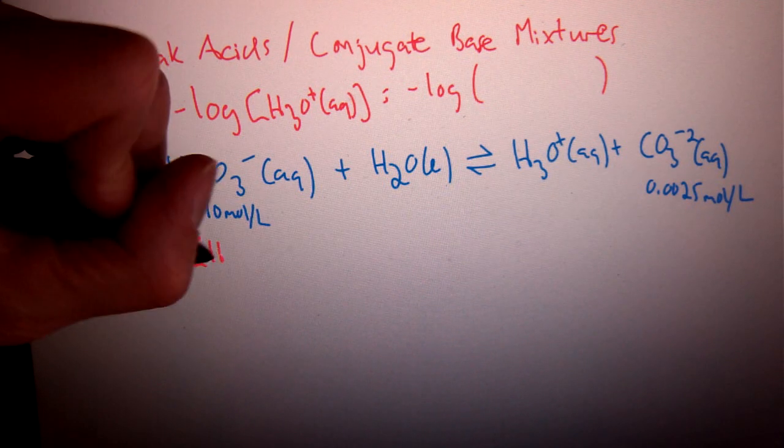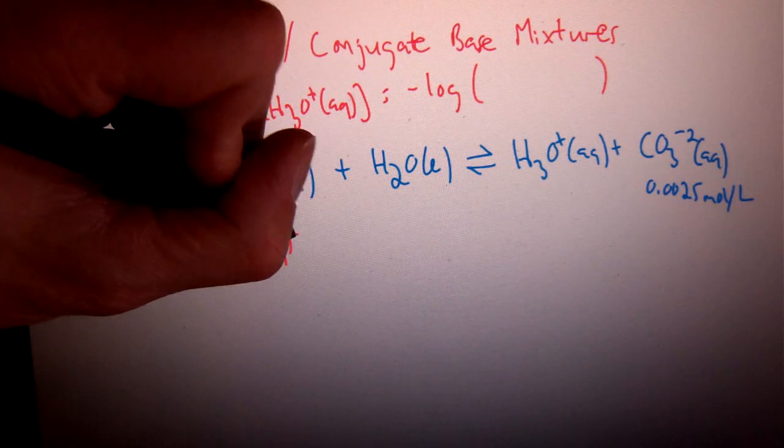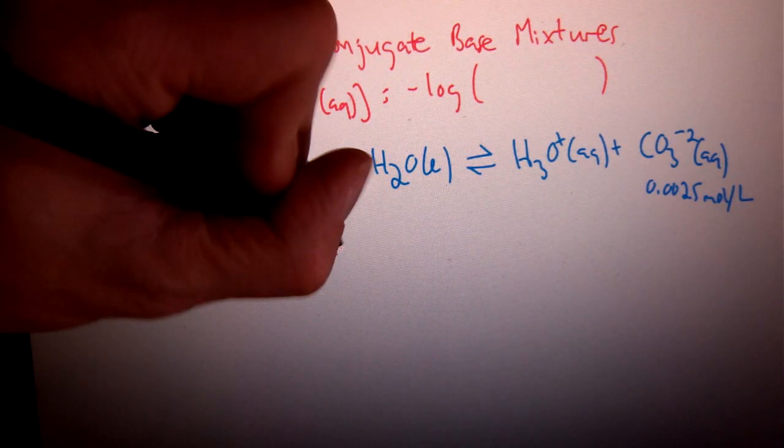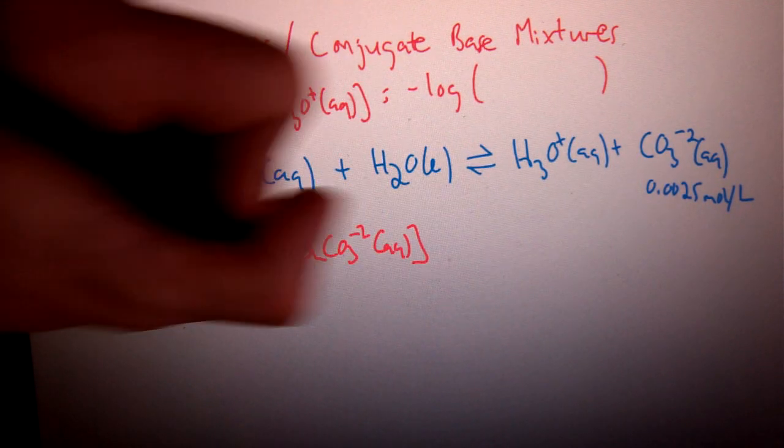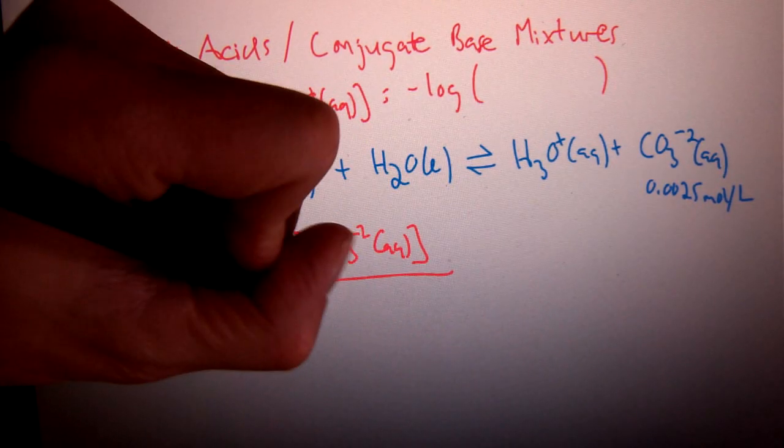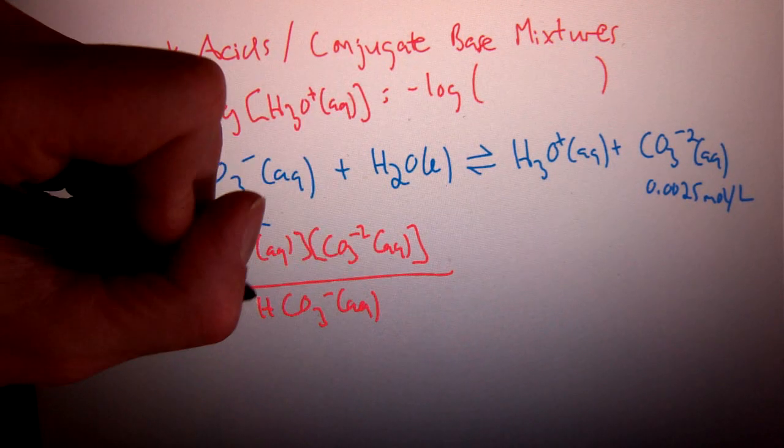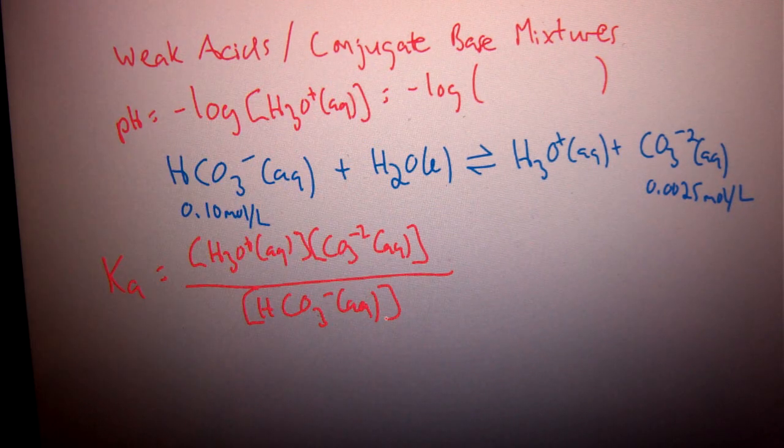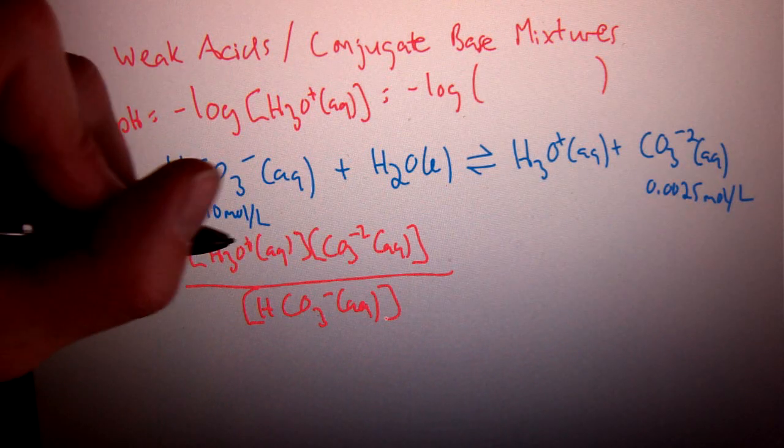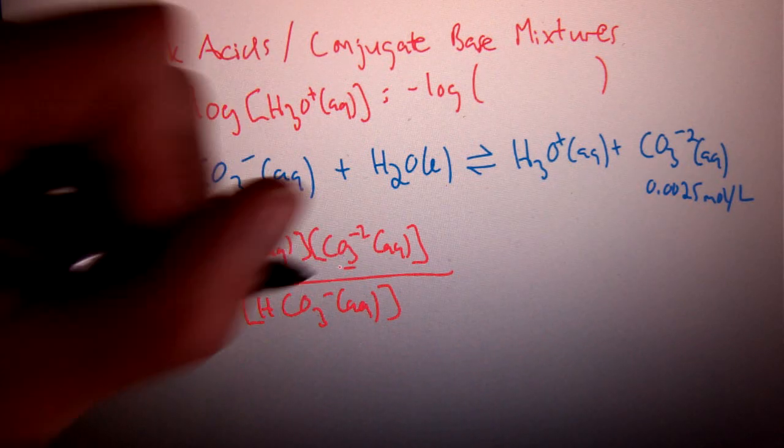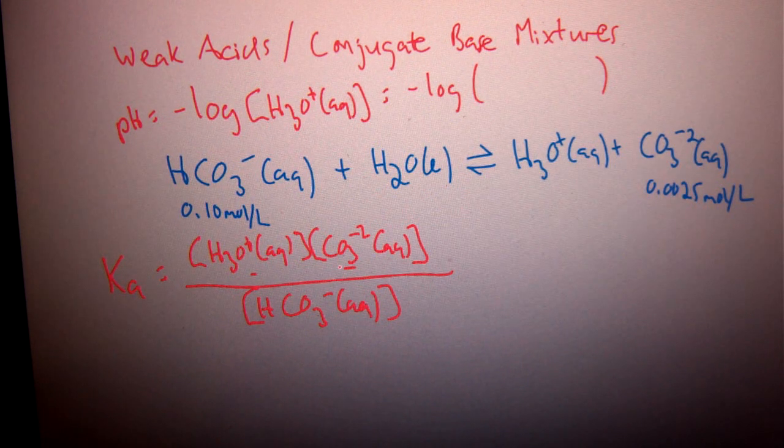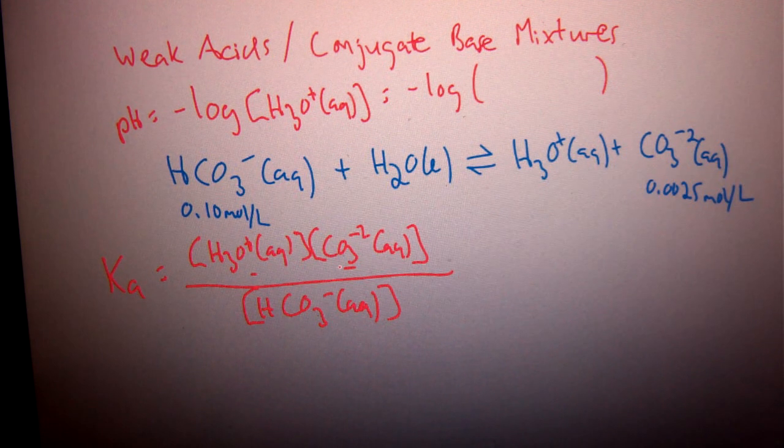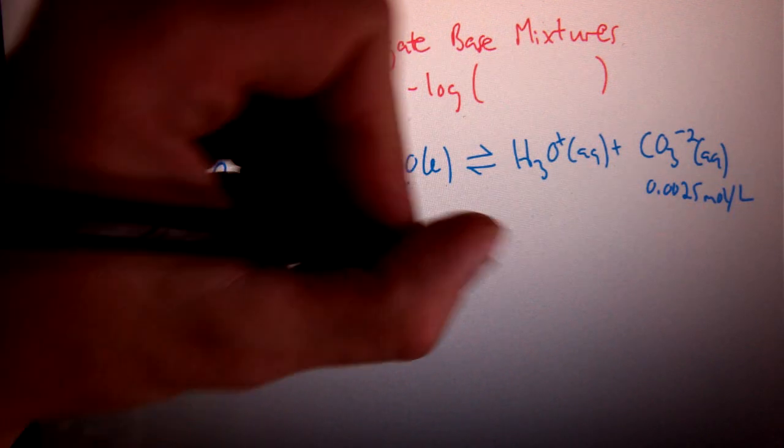So, Ka is product over reactants as normal. Okay, with a normal weak acid, I would square my H3O+ because we usually say that the products are equivalent to each other. Well, the only thing to remember with a buffer is you just don't square them. Just leave them alone and plug in your numbers as they are.